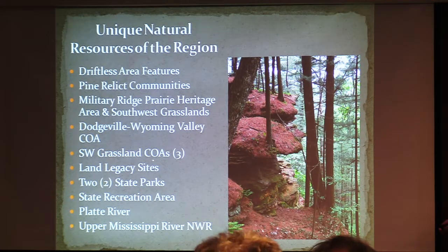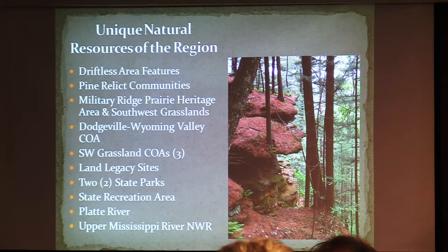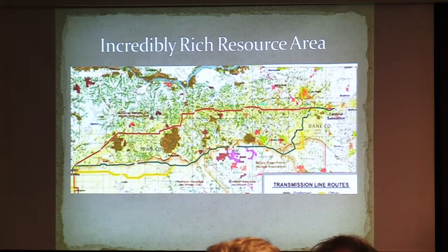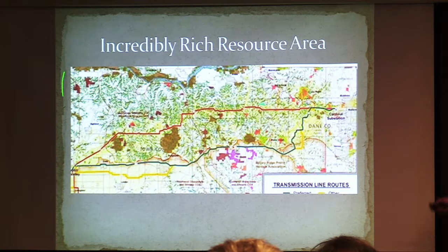There are many land legacy sites throughout Southwest Wisconsin. Of course, two state parks — the State Recreation and Black Hawk Lake Recreation Area. The Platte River is an important waterway in this area and identified as a conservation opportunity area as well. And of course the Upper Mississippi National Wildlife Refuge, which this transmission line will run across. This map gives you a sense of the northern line that's been proposed — this is just a portion of the area.